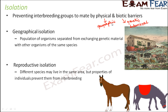Another type of isolation could be reproductive isolation. Here, different species may live in the same area, but properties of individuals prevent them from interbreeding. So even though the species are in the same location, they are still not able to interbreed because of the properties of themselves.